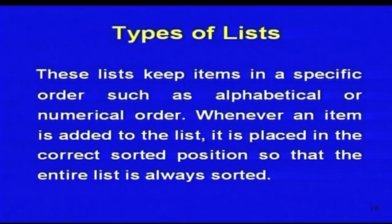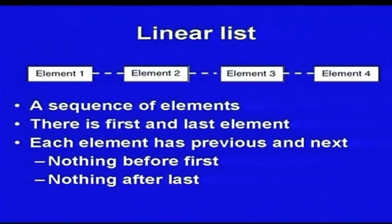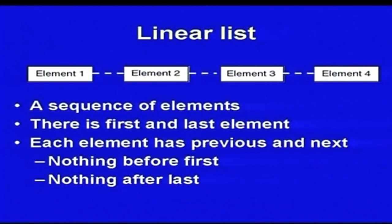Ordered lists keep items in a specific order, so most manipulations depend on that order. Whenever an item is added to the list, it has to be placed in the correct order. Similarly, when you remove an element, the rest of the elements still have to remain in sorted order. A linear list is a sequence of elements — there is a first element and a last element. Each element has a previous and a next element. There is no element before the first and no element after the last.